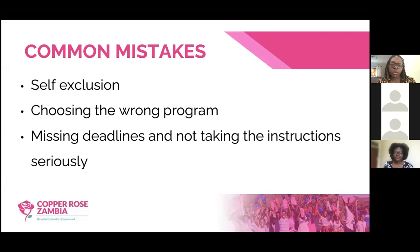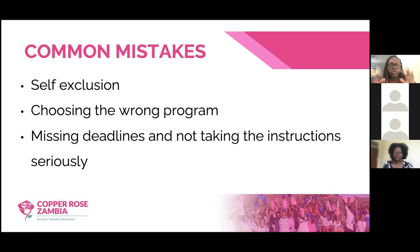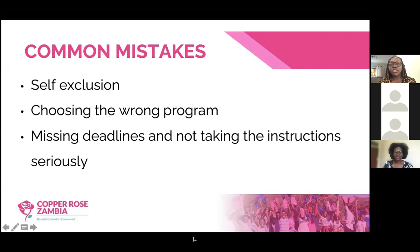Common mistake number two: choosing the wrong program. I applied for scholarships for three years and kept choosing the wrong program. In the first year, I was given admission to the University of Michigan but couldn't get the scholarship because the one I thought I'd get had already closed. In the second year, I was applying for business-related programs because I had a business administration degree, but I couldn't justify why I wanted those programs — my experience was in international development. When you choose the wrong program, you receive those disheartening rejection emails.